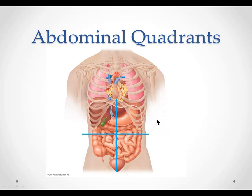We're going to continue with our lab video on organization of the body, continuing with abdominal quadrants. The abdomen can be divided into four different segments. Using the navel as an intersecting point for these two lines, we have the two regions above this main line, which would be the right upper quadrant and the left upper quadrant. Below that would be the right lower quadrant and to the left of that, the left lower quadrant.